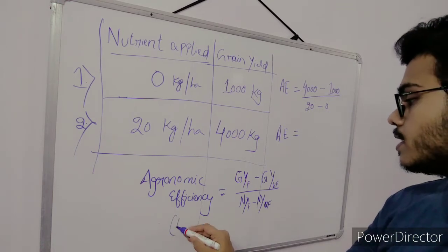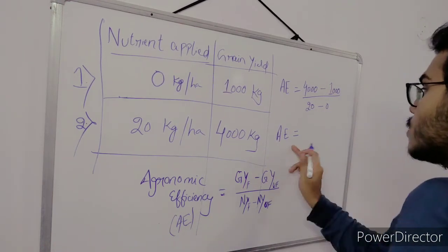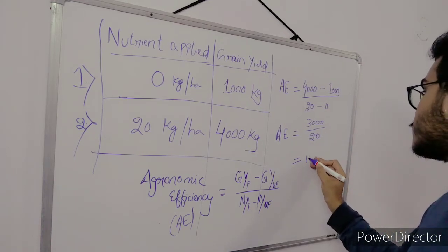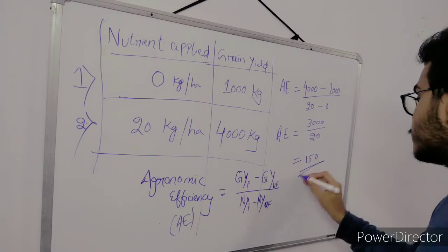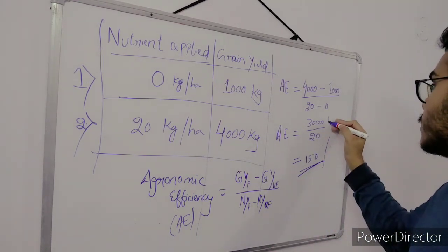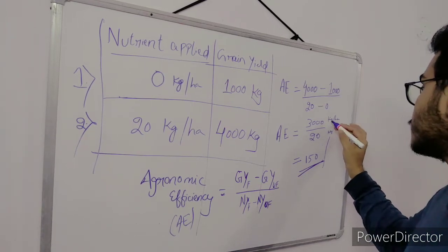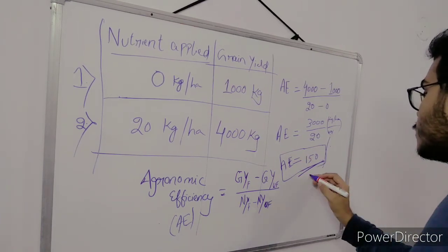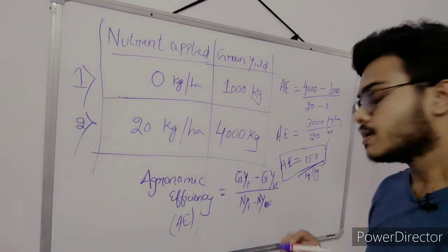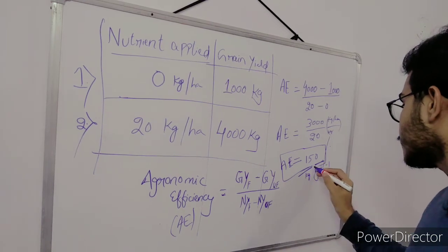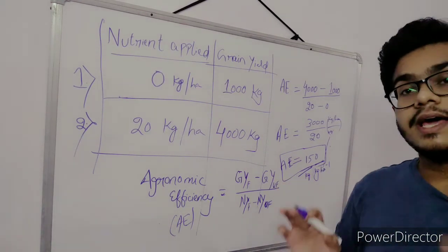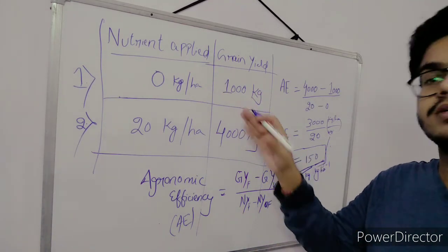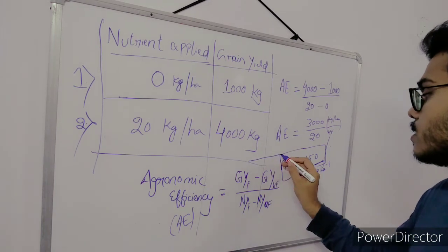So agronomic efficiency equals 3,000 divided by 20, which gives us 150. The units are kg per hectare for yield and kg per hectare for nutrient, so they partially cancel and the unit of agronomic efficiency is expressed as kg per kg. The same formula applies to straw yield as well — we can calculate the agronomic efficiency of a particular crop in the same manner.